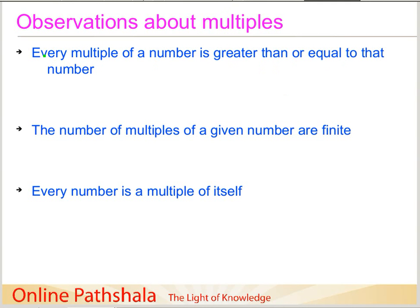Let's take the number 6 and write down its multiples. When 6 multiplied by 1 gives me 6, 6 multiplied by 2 gives me 12. Now focusing straight on the multiples: 18, 24, 30, and so on — you can just keep going.